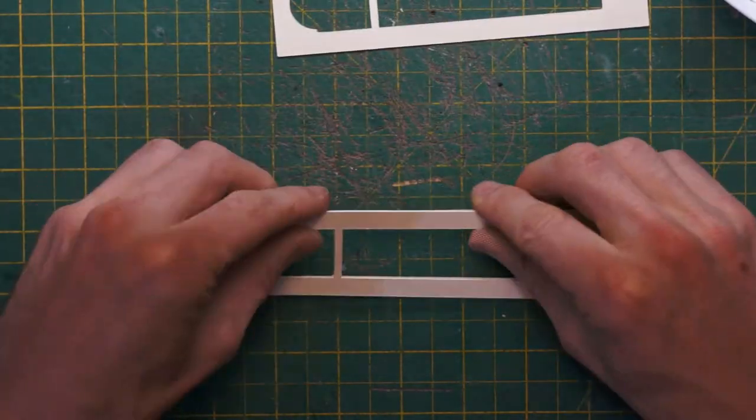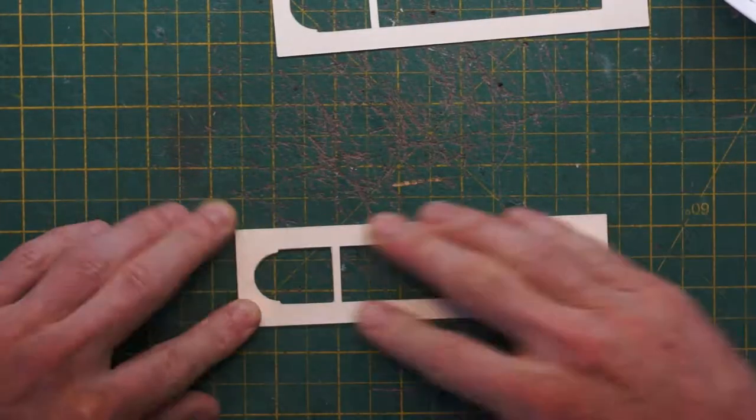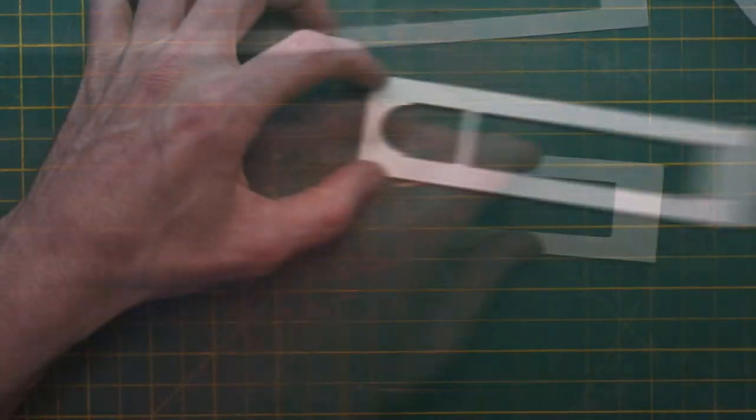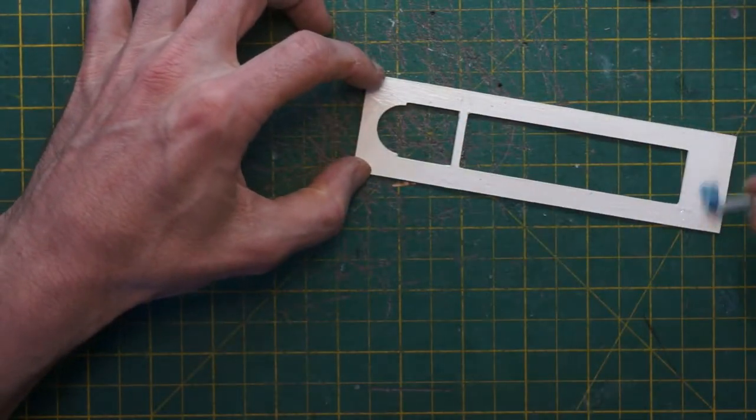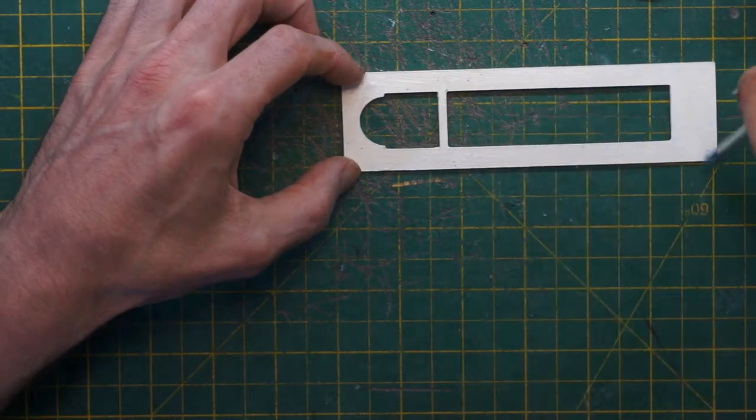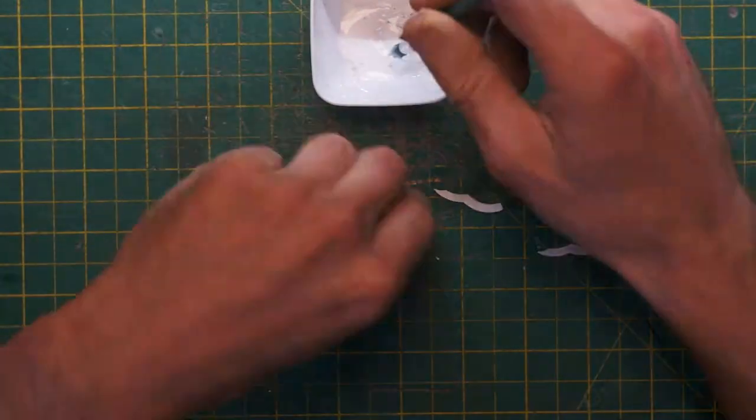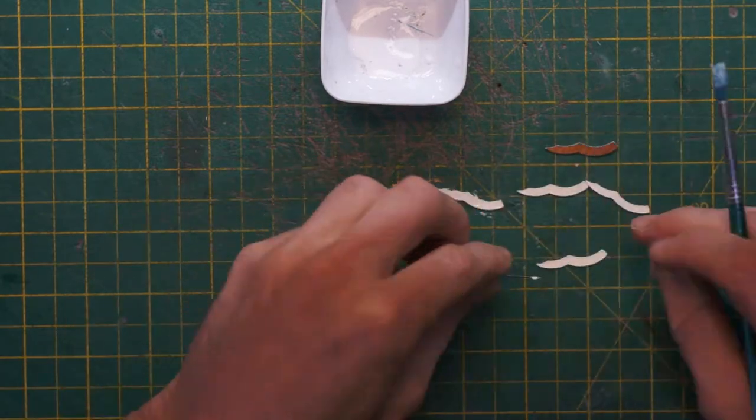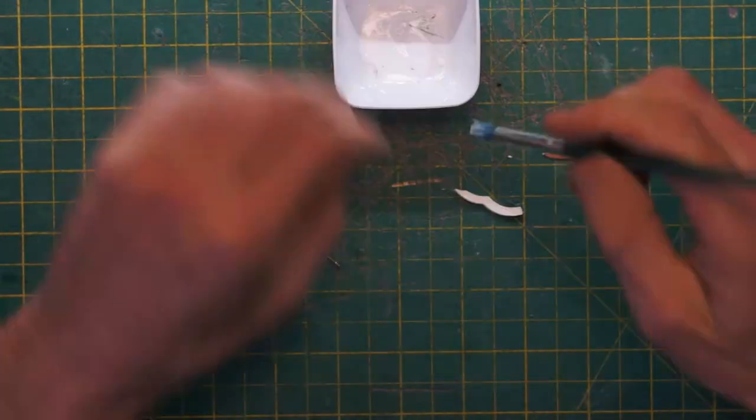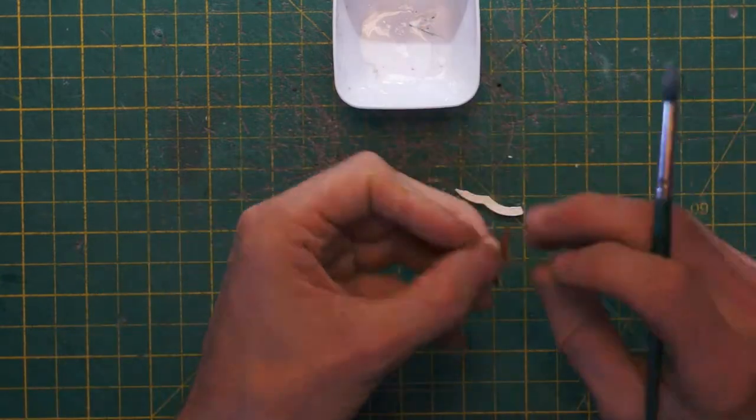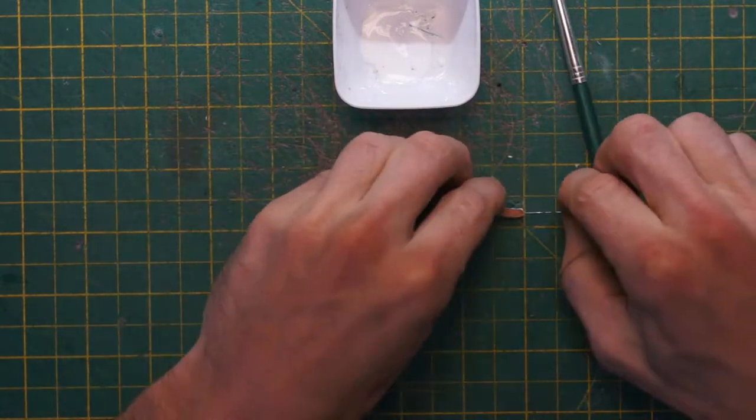Moving on to the outer frame at the front that the door is going to attach to. I won't record everything but needless to say these little bits are really quite difficult. I always use just a standard pin to hold them down when I'm trying to glue them.